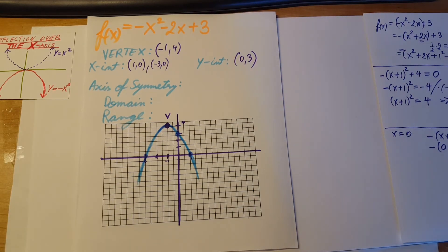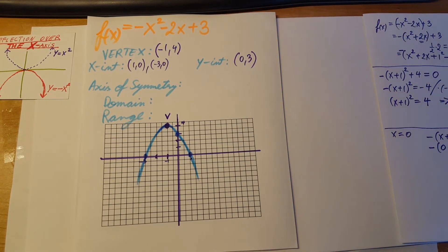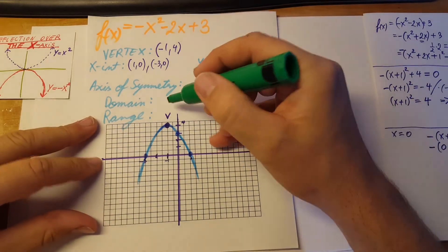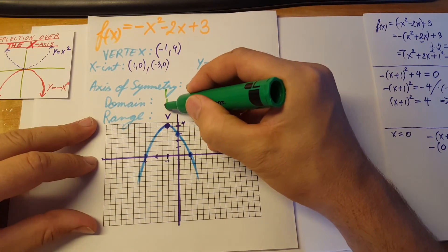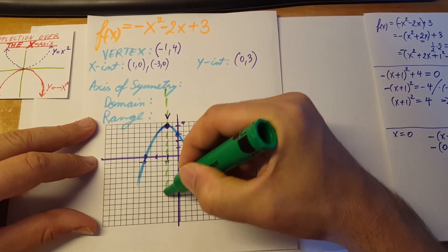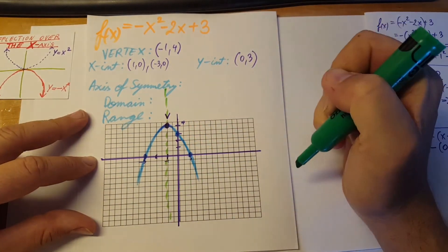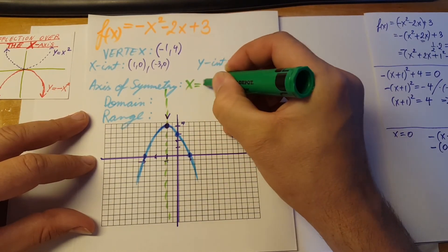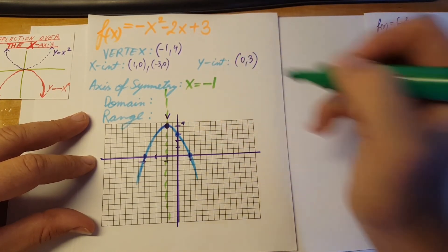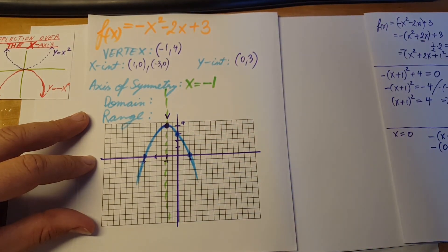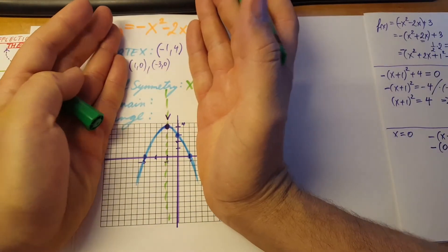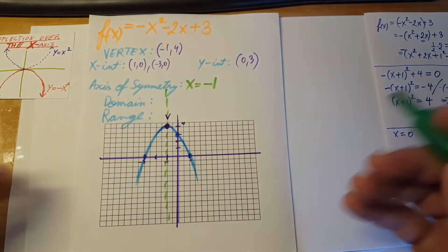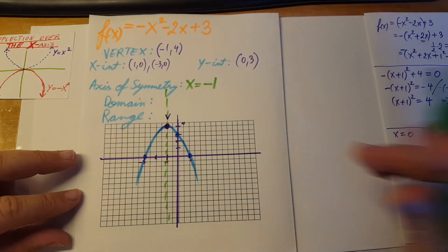For our axis of symmetry — the axis of symmetry runs along this line, which for us will be x equals negative 1. If you take the parabola and fold it along that line, the two sides will match each other.